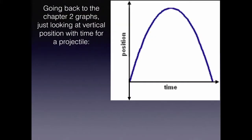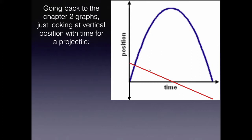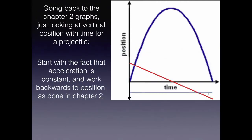Let's go back to the graphs. Here's a graph of the vertical position y of a projectile versus time — it starts and ends at the same height, giving a nice parabola. The slope of position gives velocity: positive initially, then zero at the peak, then negative. The velocity graph shows values starting positive, reaching zero at the top, then becoming more negative with time.